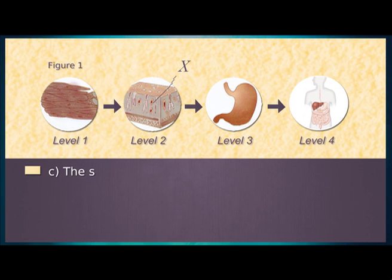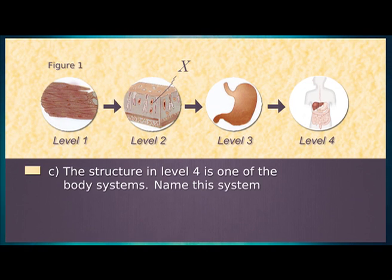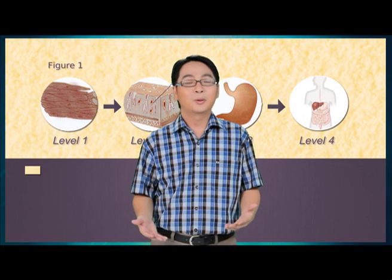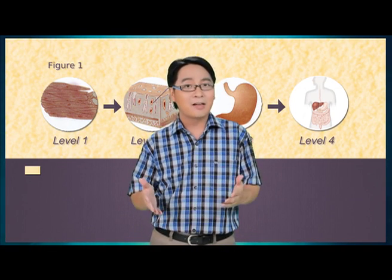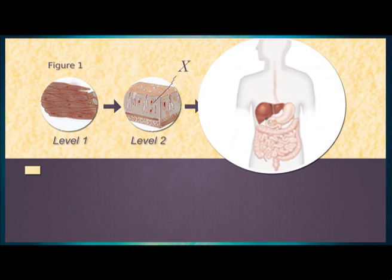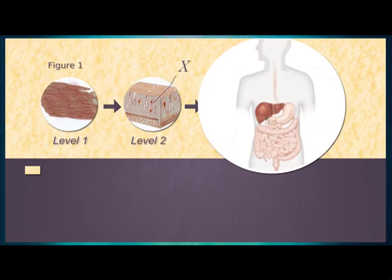Part C: the structure in level 4 is one of the body systems. Name this system. One mark. To name the system, we need to identify the organs found in the diagram. The organs include the mouth, oesophagus, stomach, small intestine and large intestine. All these organs work together to digest and absorb food in the digestive system. So the answer is the digestive system.